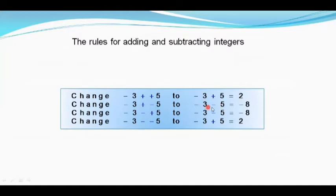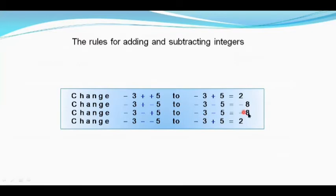For minus 3 plus minus 5: plus into minus is minus, so two negative integers — we add and give a negative sign. 3 plus 5 is 8, and since both are negative we get minus 8. For minus 3 minus plus 5: minus into plus gives minus, so minus 3 minus 5 — we add them, 3 plus 5 is 8, and since both are negative, the answer is minus 8.